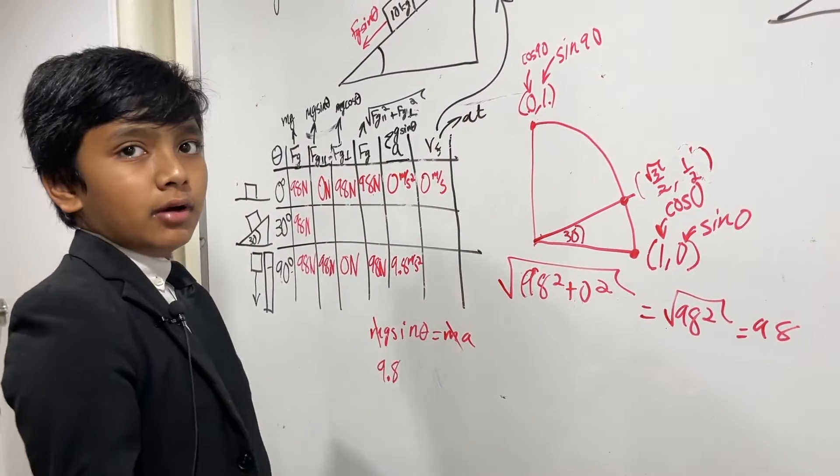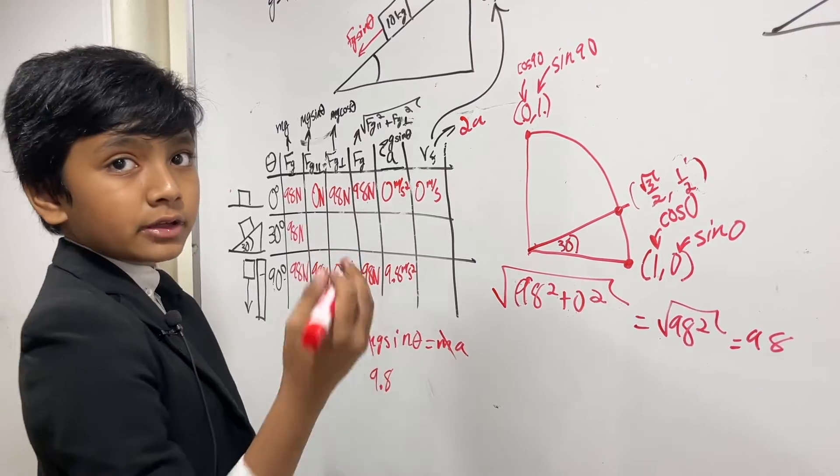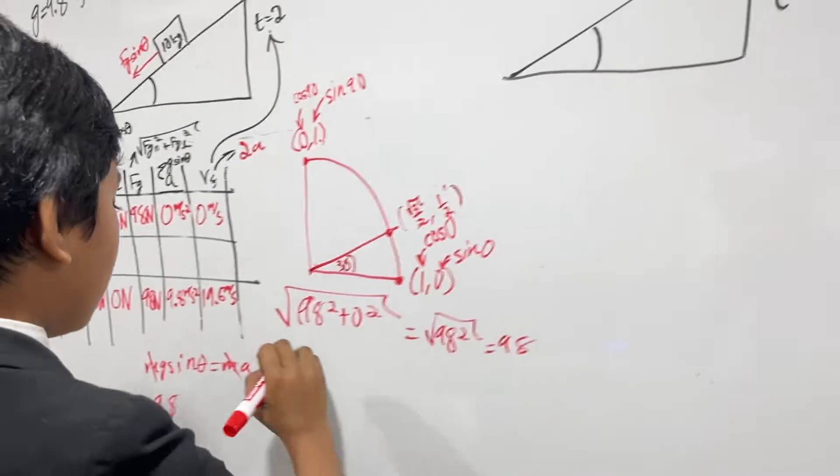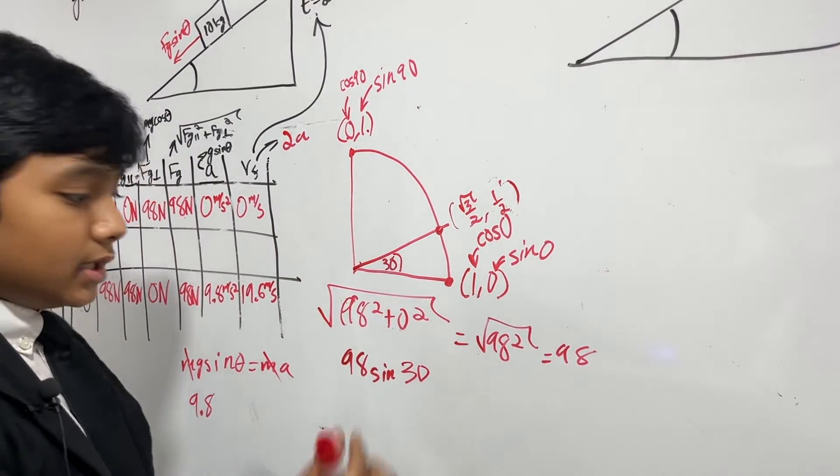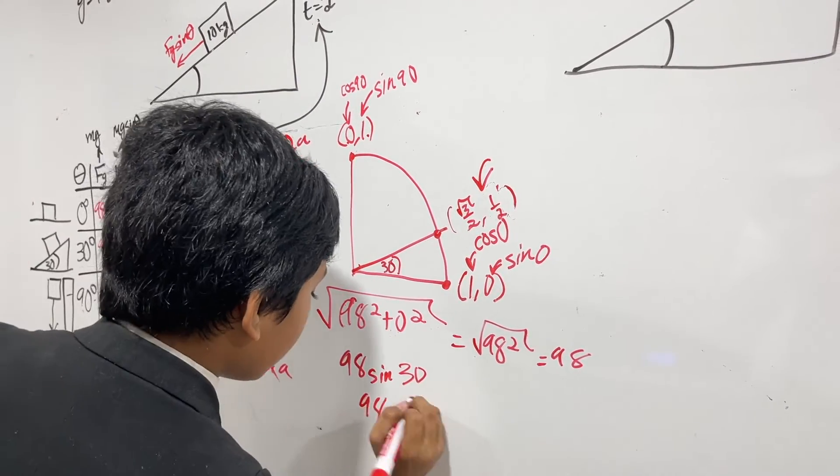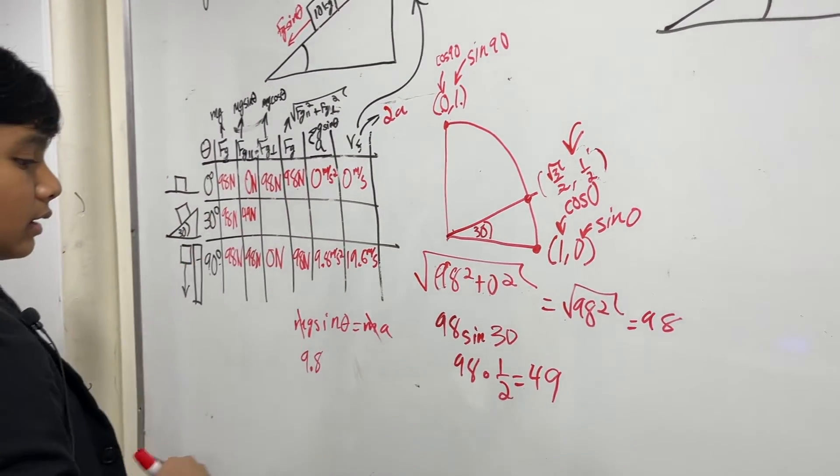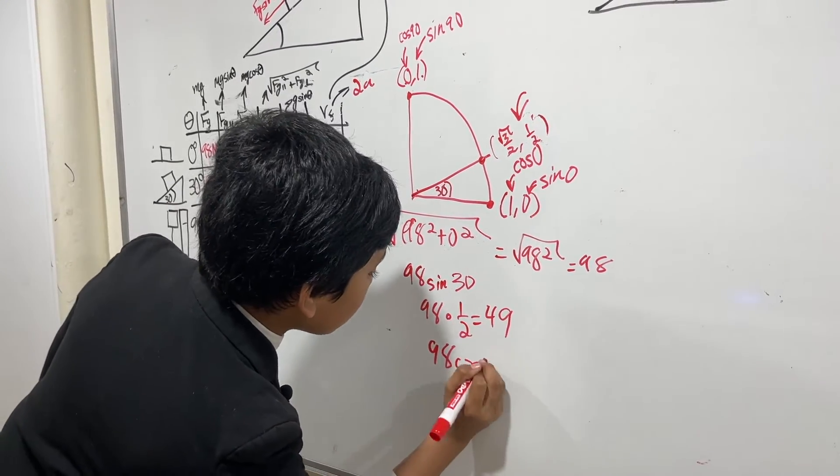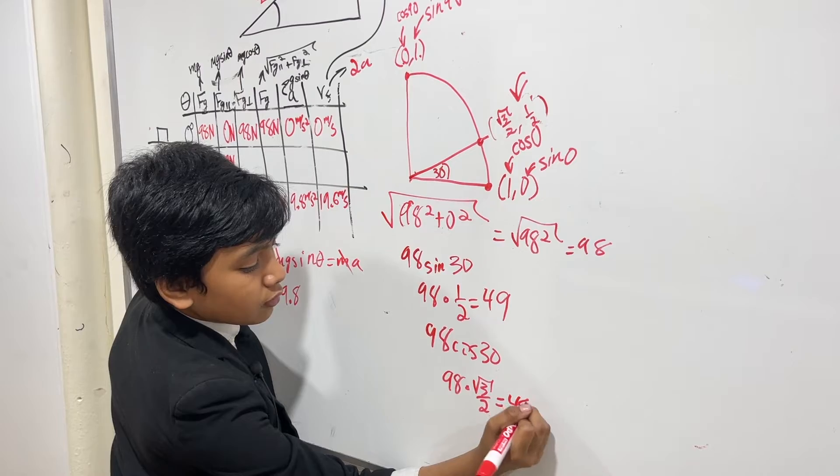Remember how I said this was AT? Well, T is 2, so this is basically just 2A. And multiplying 9.8 by 2 gives you 19.6. For sine 30, we know that we have 98 sine 30 because 98 is Mg. And then we know from our unit circle that sine 30 is a half, and one half of 98 is simply 49. And here we have 98 cos 30, which is 98 times root 3 over 2, which is 49 root 3, or 85.